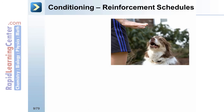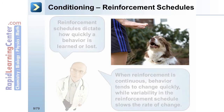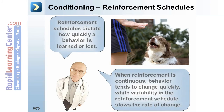Reinforcement schedules dictate how quickly a behavior is learned or lost. When reinforcement is continuous, behavior tends to change quickly, while variability in the reinforcement schedule slows the rate of change.